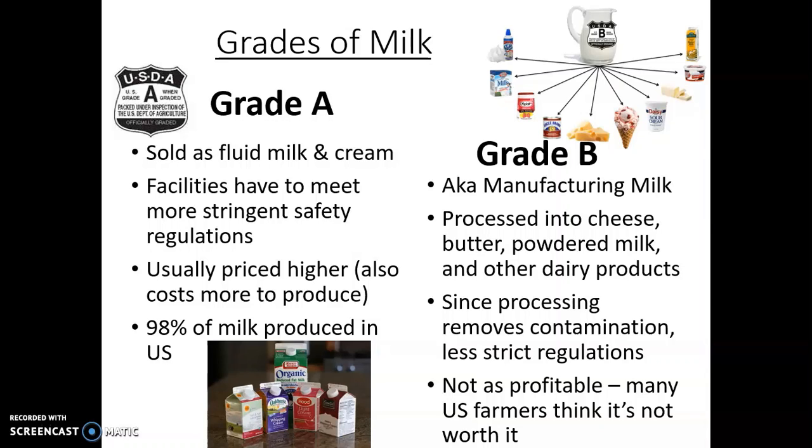And for grade A milk, facilities have to meet really stringent safety regulations. It's amazing the amount of tests that milk goes through to make sure that it is safe to drink. Grade A, for that reason, can usually be priced higher, but it also costs more to produce. And 98% of the milk that is produced in the U.S. is grade A.